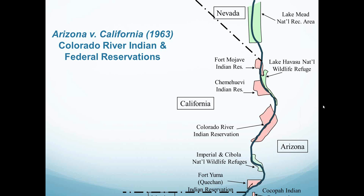The PIA standard provided that tribes would be entitled to all water they were currently or historically utilizing to irrigate lands on their reservations, and also enough water to irrigate any other lands that in the future could be economically feasibly irrigated. This resulted in a fairly generous award of water to the tribes along the Colorado River. At the same time, the court also recognized federal reserved rights — non-Indian federal reserved rights — to wildlife refuges and national forests alongside the Colorado River.